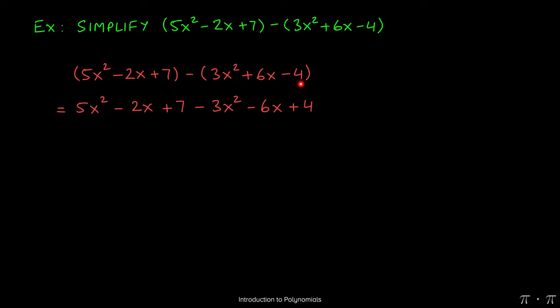At this stage, we can start combining like terms. So 5x² - 3x² will give us 2x², negative 2x - 6x will yield negative 8x, and then lastly, 7 + 4 would give us 11.